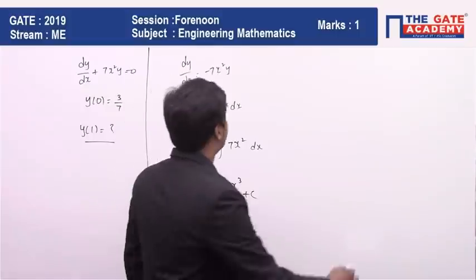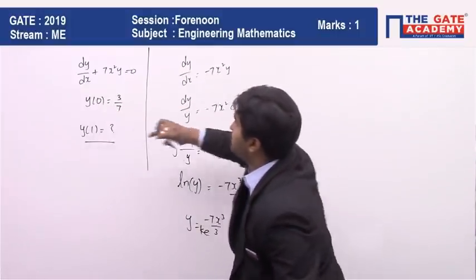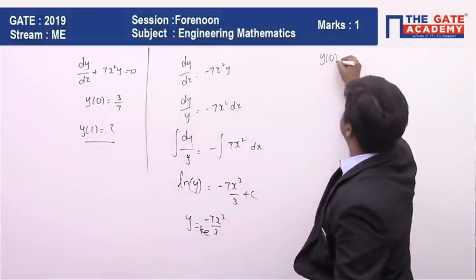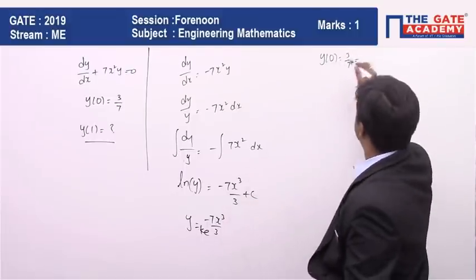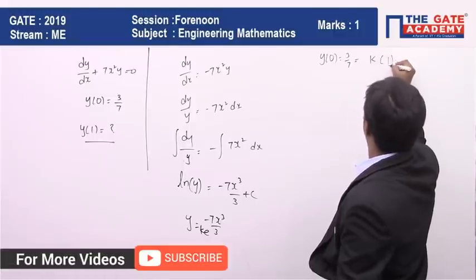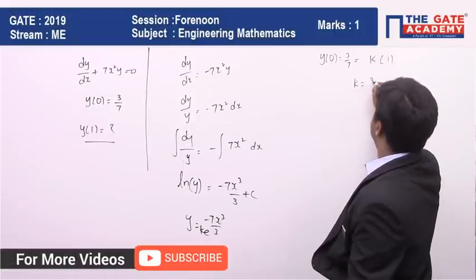Now if you put the value of x = 0, y(0) is given as 3/7. So let me substitute the value of x = 0 here. Then I'm going to have k times 1, which means the value of k = 3/7.